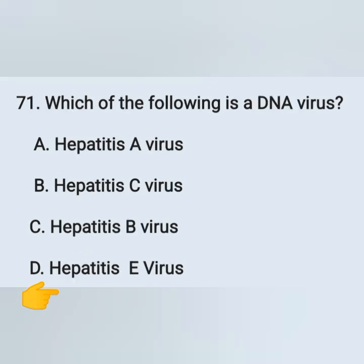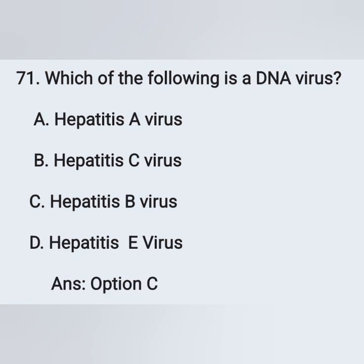Question 71: Which of the following is a DNA virus? Option A: Hepatitis A virus, Option B: Hepatitis C virus, Option C: Hepatitis B virus, Option D: Hepatitis E virus. Among these, the DNA virus is Hepatitis B virus — Option C is the correct answer.